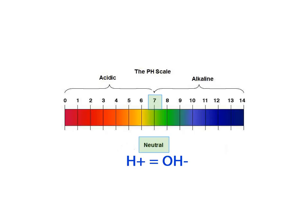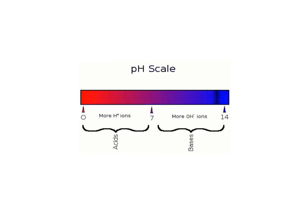A pH reading from 1 to 6.9 is acidic on the pH scale and from 7.1 to 14 is basic on the pH scale.